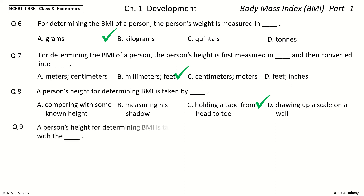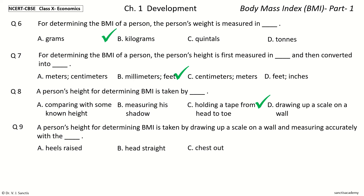So a person's height for determining BMI is taken by drawing up a scale on a wall and measuring accurately with the dash. The options are: heels raised, head straight, chest out, arms raised upright. And the answer is head straight.